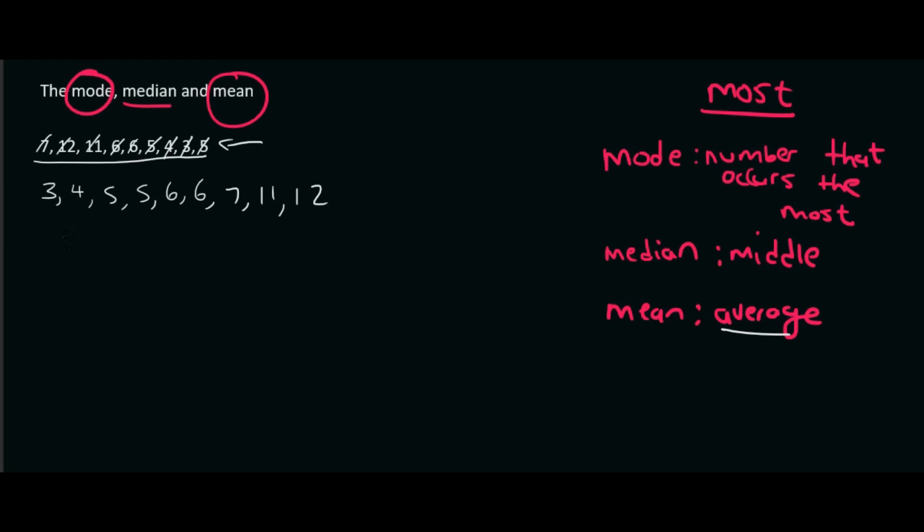So let's find the mode. Well, we know that the mode is the number that occurs the most. Well, there's two 5s and there's two 6s. So unfortunately for this one, there is no mode. You can't have two modes. But if there was a third 5, then our mode would be 5.